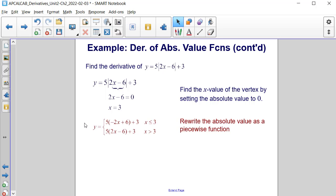Next, we rewrite the absolute value function as the piecewise function that it is. So that will be 5 times the negative of 2x minus 6, or negative 2x plus 6, being multiplied by 5, and then plus 3. And that's for x values less than or equal to 3.